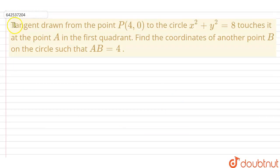So, today's question is: Tangent drawn from the point P(4, 0) to the circle x² plus y² equals 8 touches it at the point A in the first quadrant. Find the coordinates of another point B on the circle, such that AB is equal to 4.